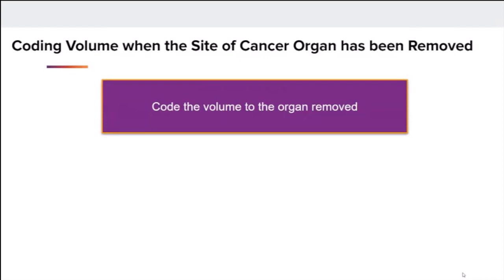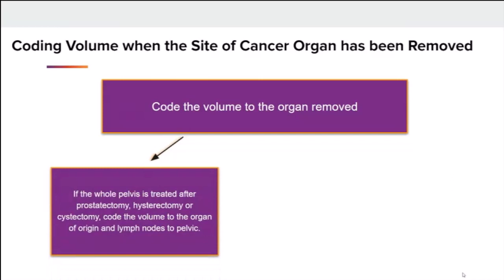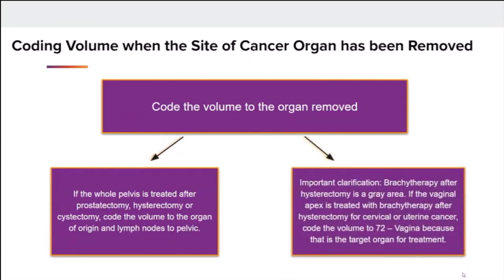Appendix R in the STORE manual also provides instruction for coding the volume when the primary site organ has been removed. STORE states in most cases code the volume to the organ removed. If the whole pelvis is treated following prostatectomy, hysterectomy, or cystectomy, code the volume to the organ of cancer origin and lymph nodes to pelvic. There are two exceptions to this rule. If the vaginal apex is treated with brachytherapy after hysterectomy for cervical or uterine cancer, code the volume to 72 vagina because that is the target organ for treatment. Also, for patients with breast cancer receiving post-mastectomy radiation where all breast tissue has been removed, the treatment volume is coded to chest wall and not breast.